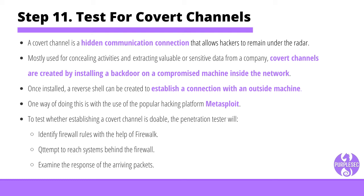Step eleven: test for covert channels. A covert channel is a hidden communication connection that allows hackers to remain stealthy, mostly used for concealing activities and extracting sensitive data. Covert channels are created by installing a backdoor on a compromised machine inside the network, after which a reverse shell can be created to establish a connection with the outside machine belonging to the hacker — one way of doing this is with the popular hacking platform Metasploit. To test whether establishing a covert channel is doable, the penetration tester will identify firewall rules with the help of Firetalk, attempt to reach systems behind the firewall, and examine the response of arriving packets.